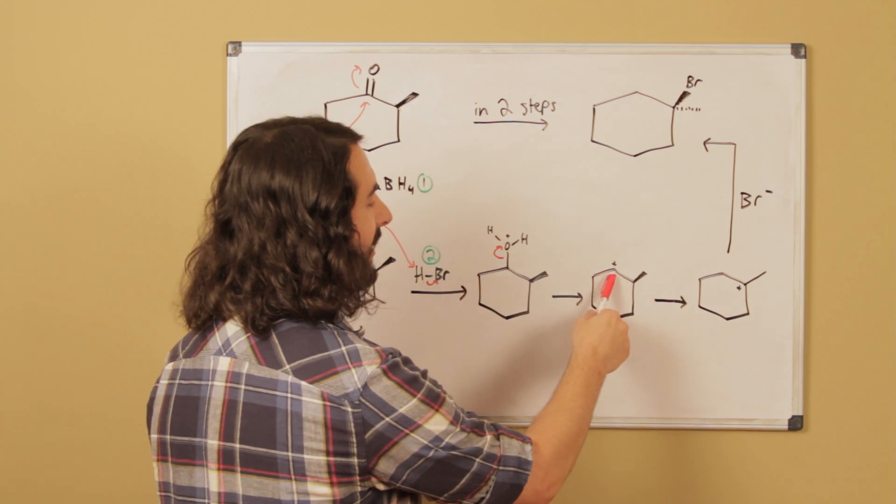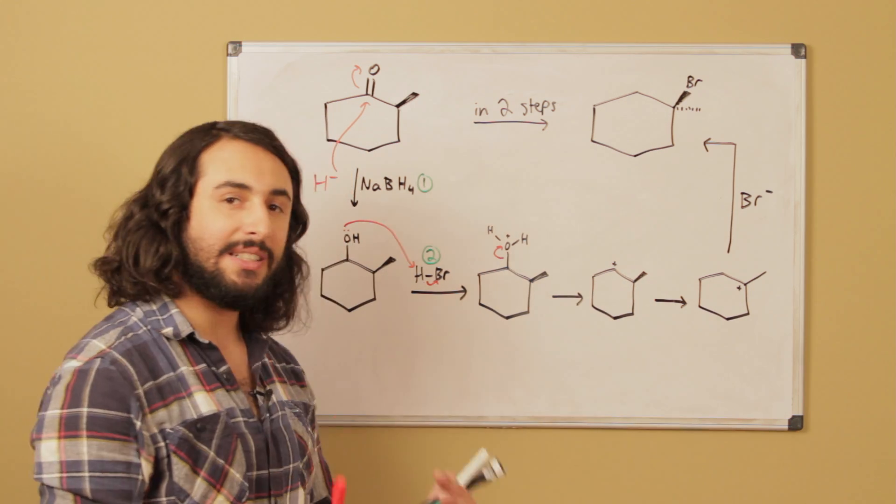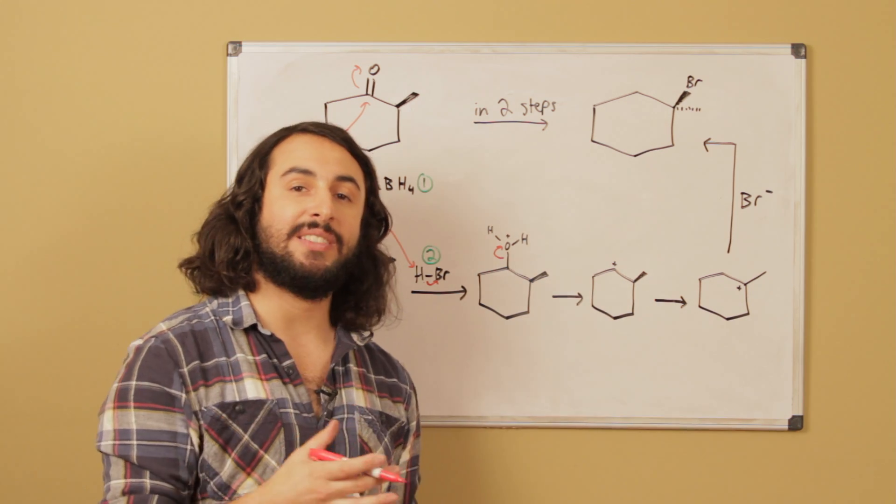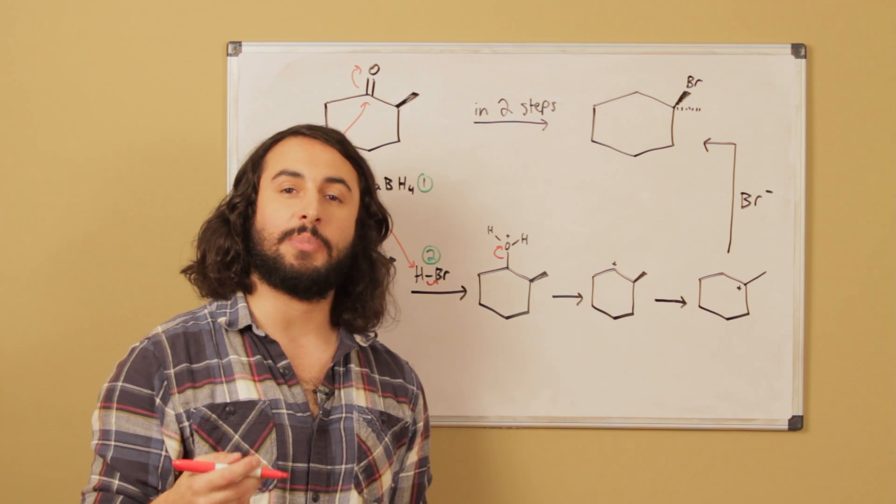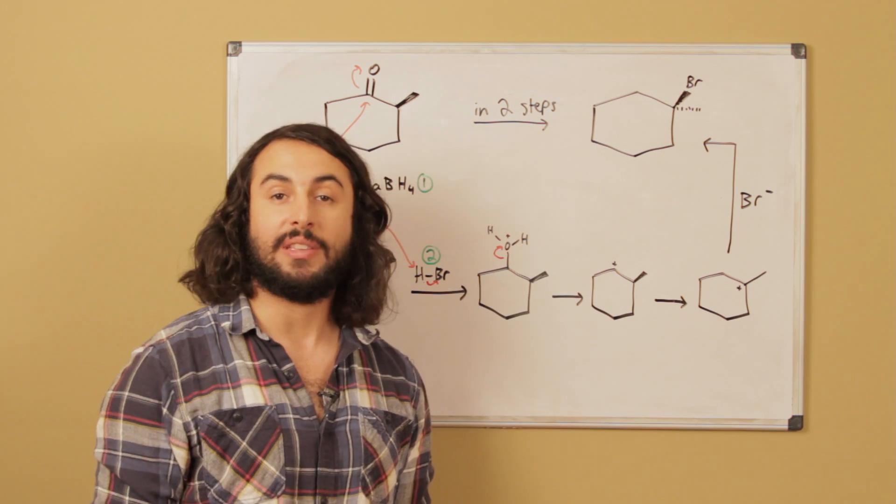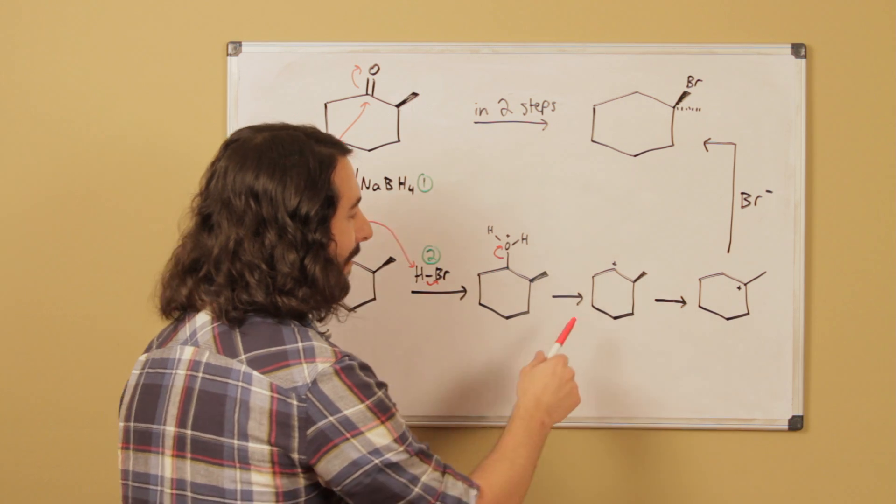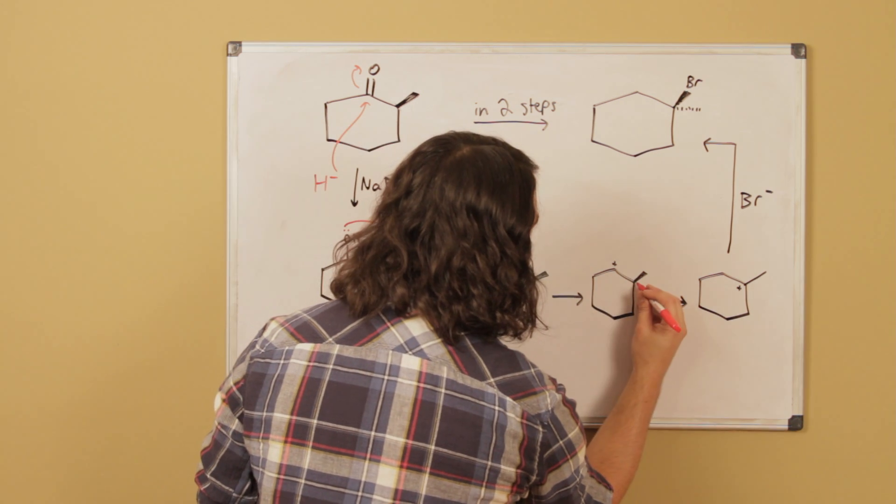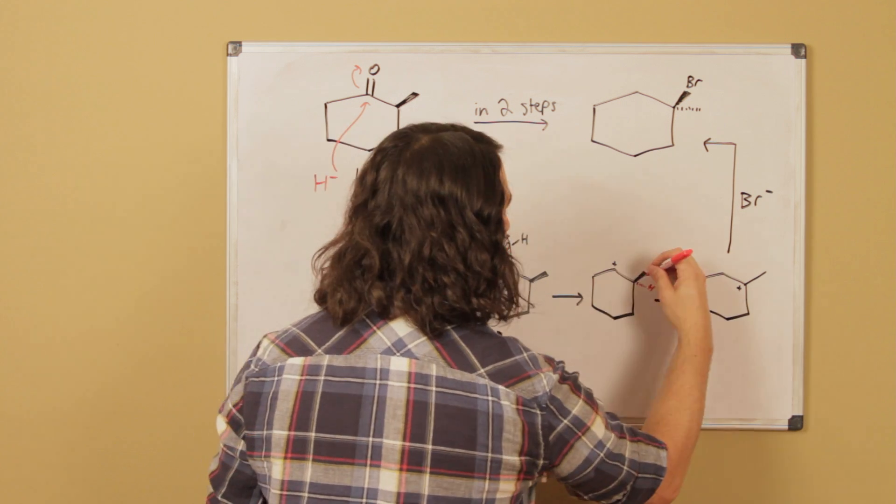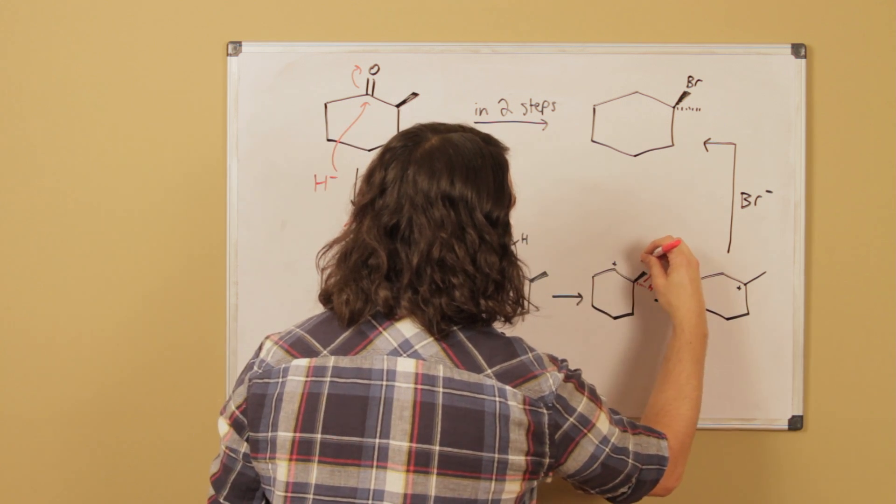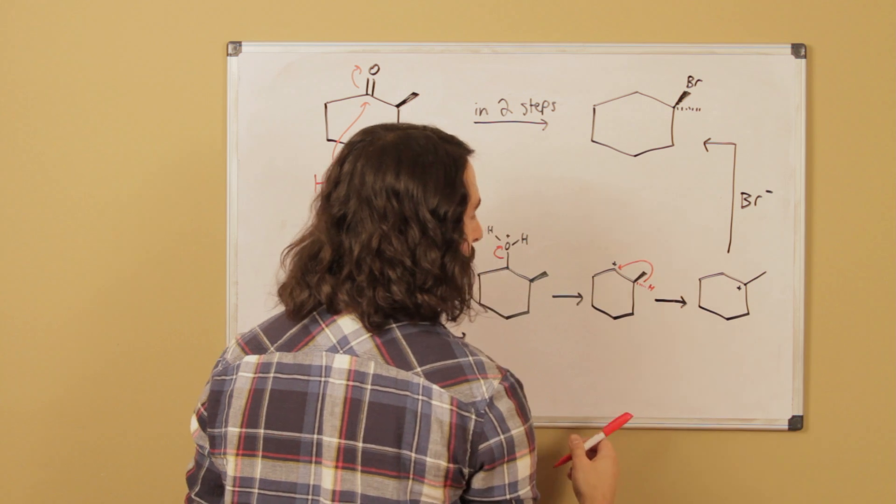If we have a secondary carbocation, remember that a secondary carbocation that is adjacent to a tertiary or quaternary carbon, you're probably going to get some kind of hydride or methanide shift. So what's happening here is we've got this implied hydrogen, and what we can do is it'll spontaneously just do a hydride shift.